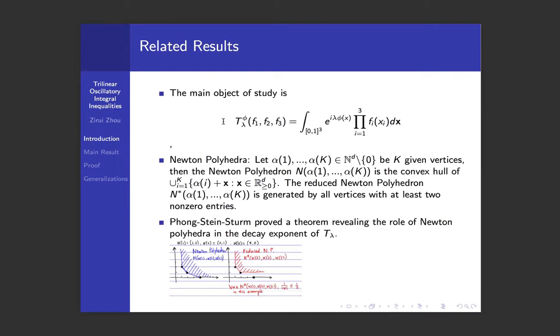The main thing we're interested in is the following trilinear form: T_λ(φ) of f_1, f_2, f_3 is defined to be the integration over the unit cube in R³ of an oscillatory factor e^(iλφ(x)) times a threefold product of f_i(x_i).